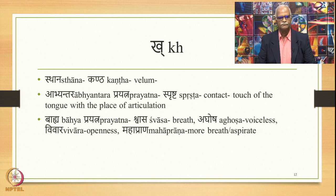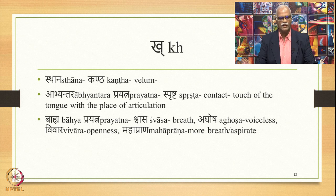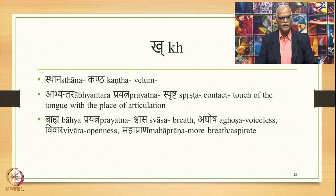Then comes kha, whose place of articulation is kantha or vilam, whose abhyantara prayatna is sprashta — contact or touch of the tongue with the place of articulation. The bahya prayatna is shvasa, aghosha, and vivara — same as ka. The only difference is this is mahaprana: ka was alpaprana, kha is mahaprana. It requires more breath and is called an aspirate sound. Compare: ka, kha, kha.